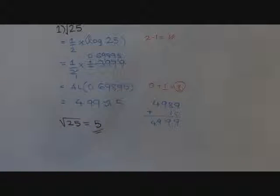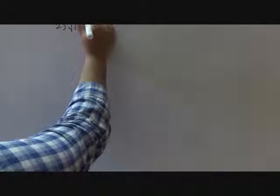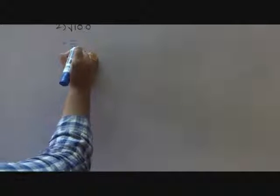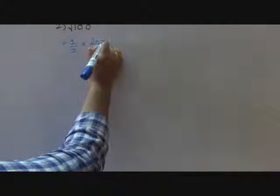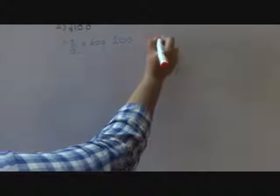The second example using the log method: we will find the square root of 100. Remember, the square root sign equals 1 by 2, so we write 1 by 2 into log of 100. There are 3 digits here, so the characteristic is 3 minus 1 equals 2. Our log will come after 2 point.